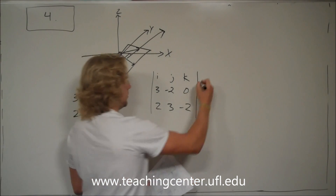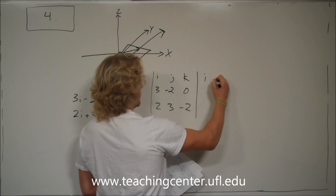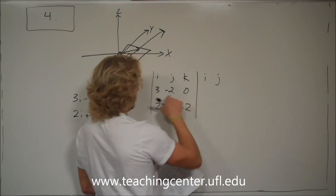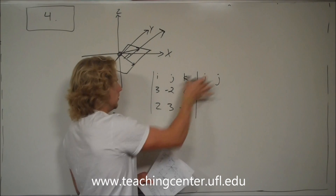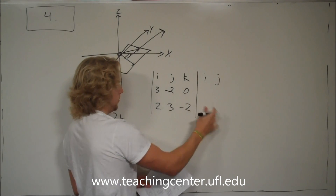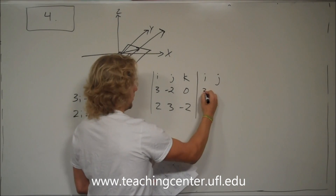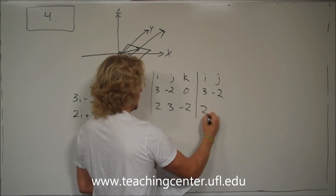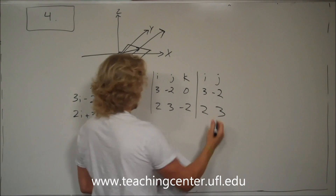What you want to do after that is take the first two columns and bring them over to the right side of the matrix. So you copy: 3, negative 2, then 2, 3.